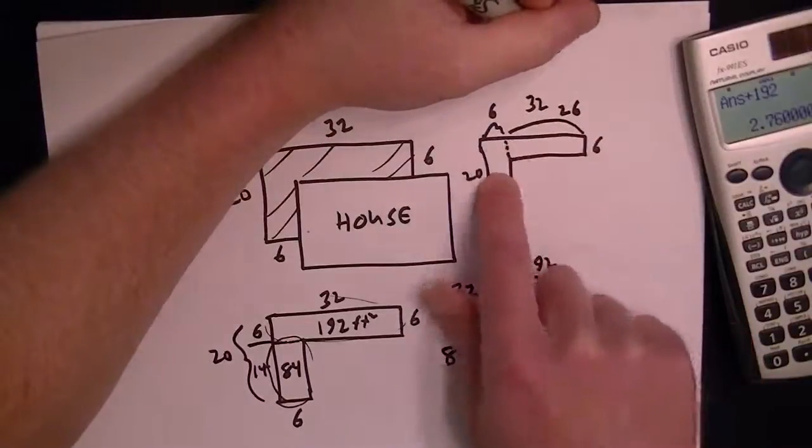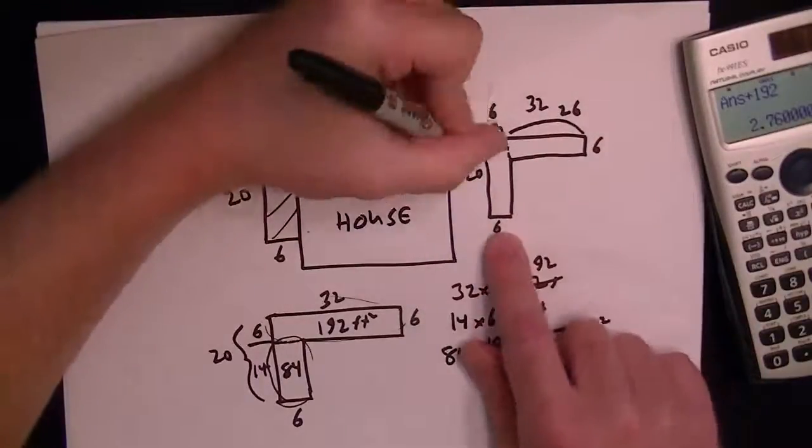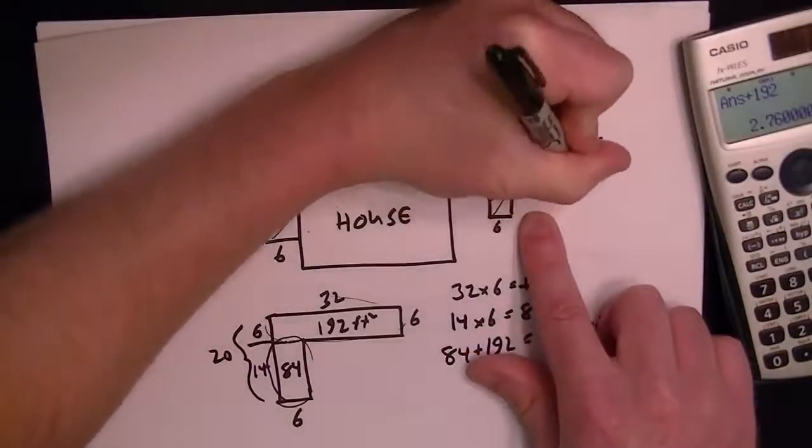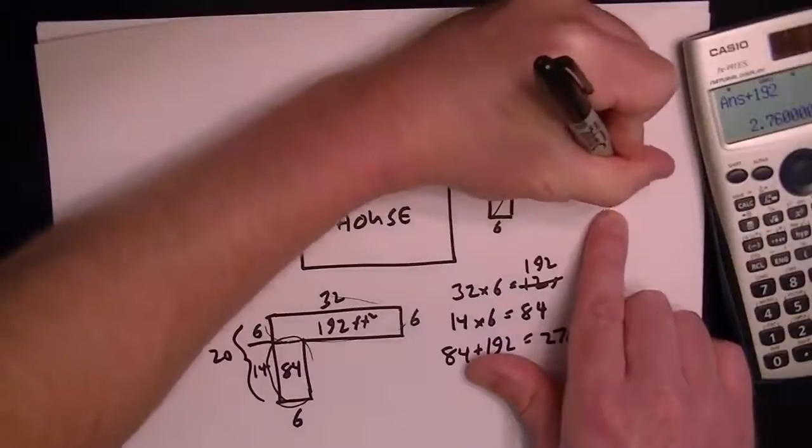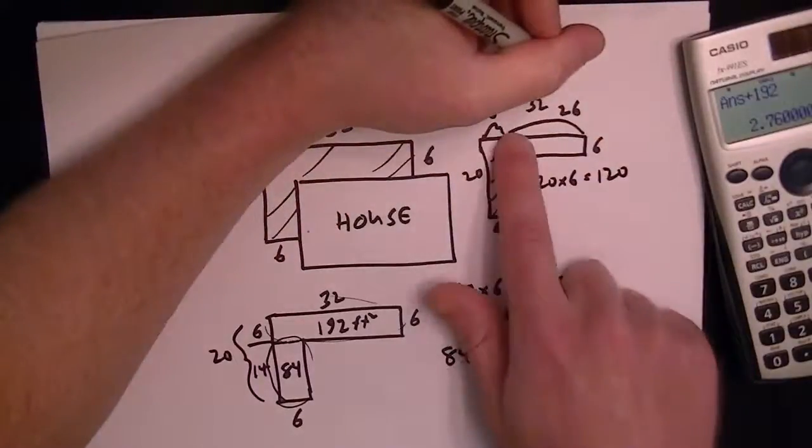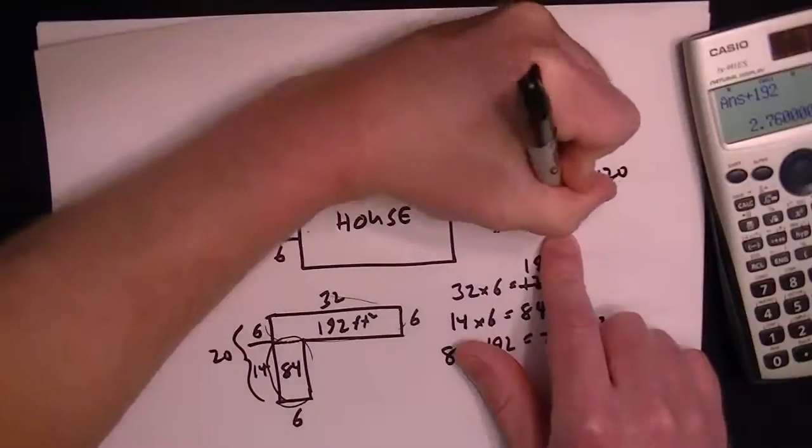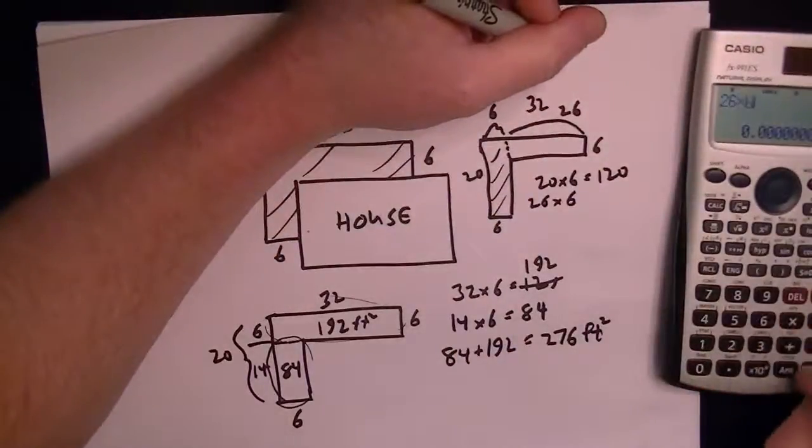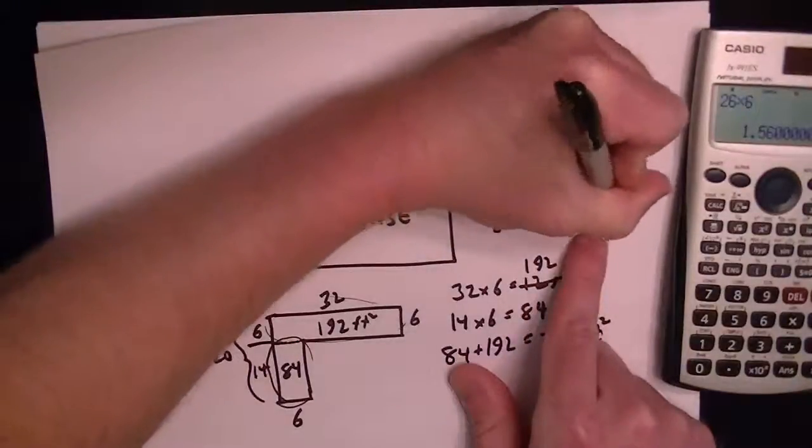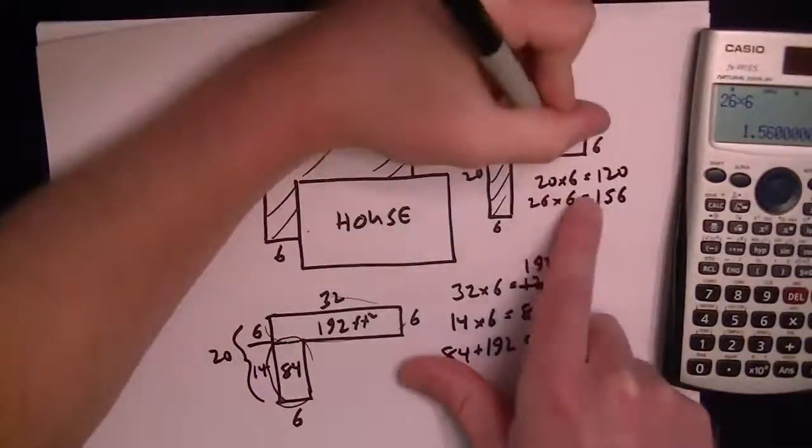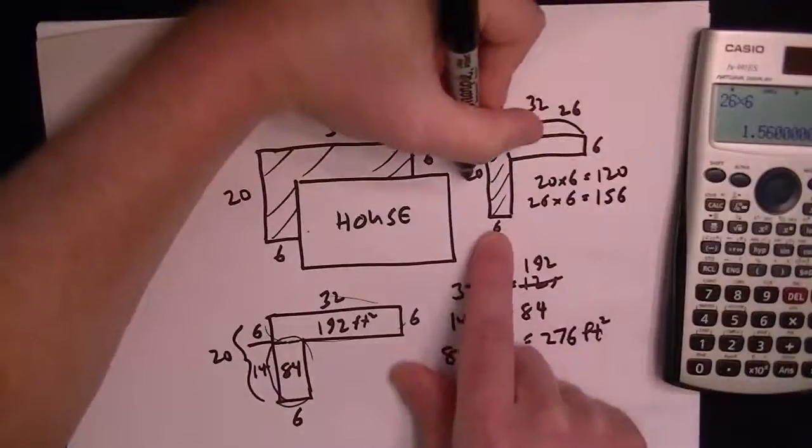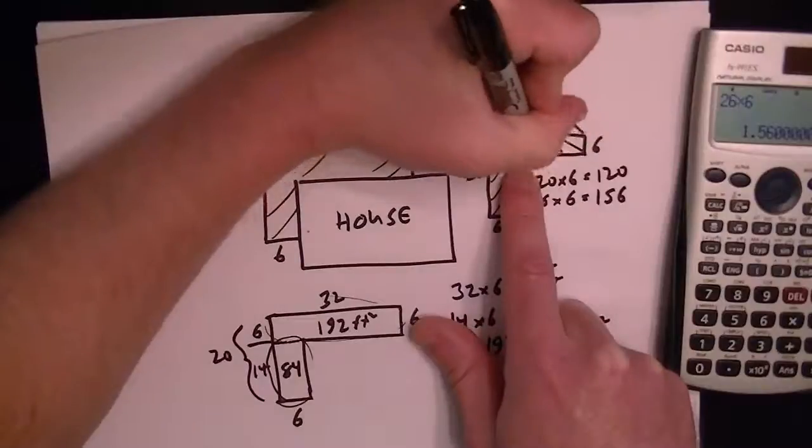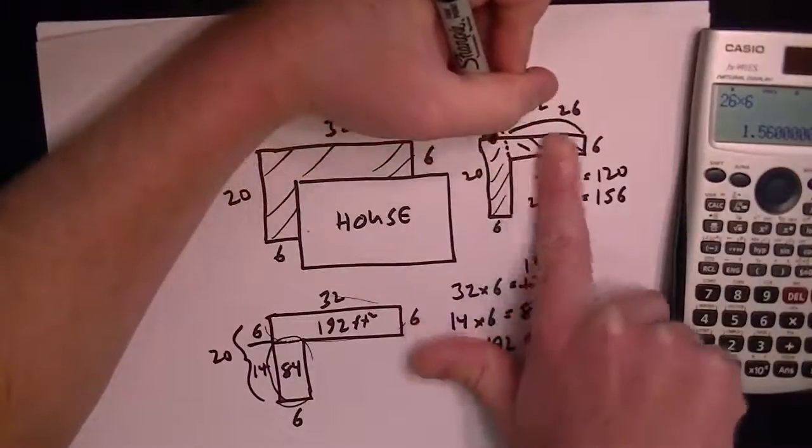So to get the area, you multiply this one so you get 20 by 6, it's going to give you 120. And then you're also going to get 26 by 6 is equal to 156. So now those are the two areas. So this one is 20 by 6 and this one is 26 by 6. So you know I'm doing it splitting it into this rectangle and this rectangle.